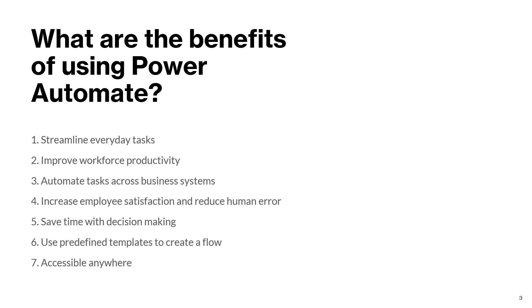Use predefined templates to create a flow. A great benefit of Power Automate is that you have so many templates available to kick-start your automation journey in very little time. Just go to the template section, search for the templates you require, and if you find one that fits your requirement, just click on it, select it, and start creating your automation.